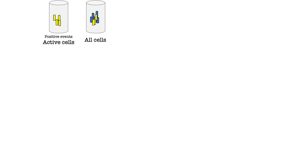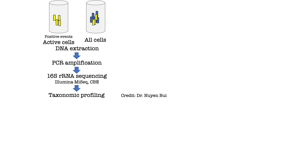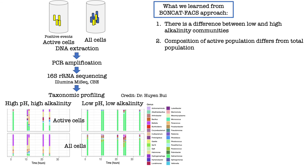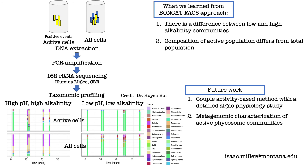We now take the active fraction of the ficosome communities in parallel with the community as a whole through our sequencing pipeline here in-house at the CBE. Using taxonomic and phylogenetic methods, we have characterized ficosome communities separated into the active and bulk community. Credit to Dr. Hian Bui, a research scientist in Robin Gerlach's lab, for help with this part of my project. We observed differences in community composition between high and low pH and alkalinity conditions, and have found a few populations that are enriched in the active fractions. This data is from a pilot study, and now we want to design a similar experiment where we collect more cells so that we can construct active metagenomes of the ficosome communities.